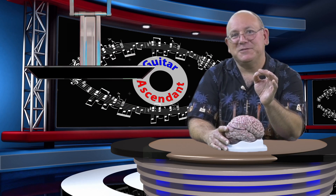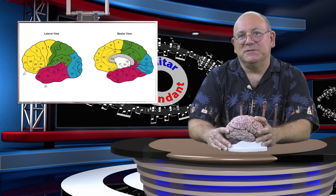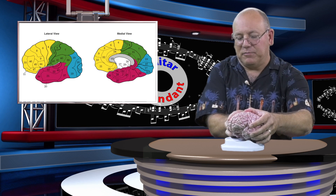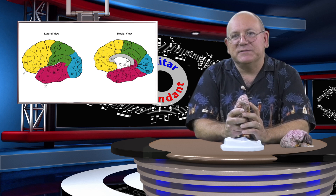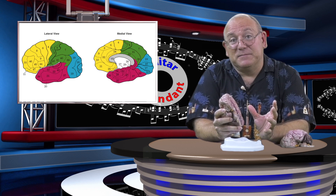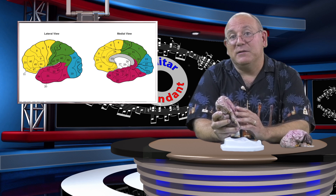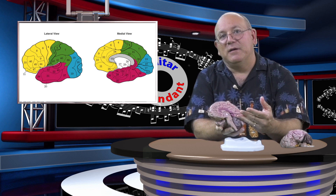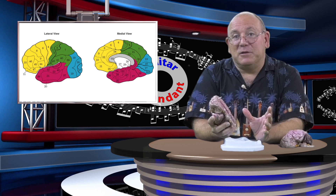Now, to identify the functions that reside in the lobes of the cerebral cortex, we will be using Brodmann's maps. The image on the left is the lateral view, which is the outside surface. The image on the right is the medial view. Brodmann was a neuroscientist who noticed various organizations of neurons and identified about 50 areas based on their differences. Later, scientists recognized that Brodmann's map actually identified specific abilities located in the cerebral cortex. We will not discuss each Brodmann area in this series, but only those that are relevant to playing music.